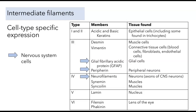There's even an intermediate filament called nestin, which is expressed during embryonic development. Any one cell in the nervous system will express only one type of these intermediate filaments, so that if we take a slice through the brain and stain with GFAP, we can be pretty sure we're looking at a glial cell. If we see a neurofilament, we can be certain we're looking at a neuron. That's what I mean by tissue-specific expression.